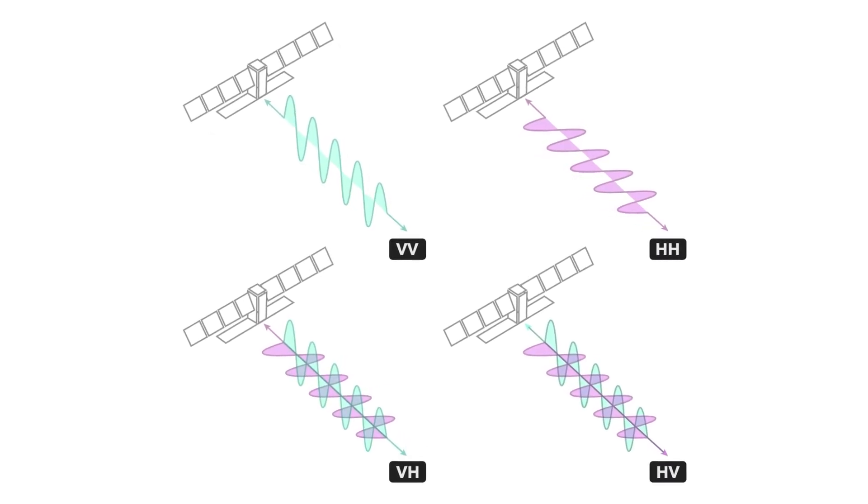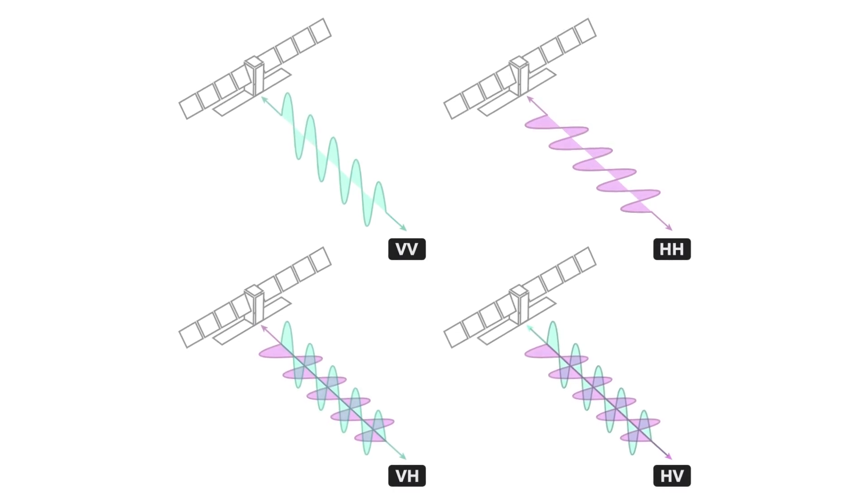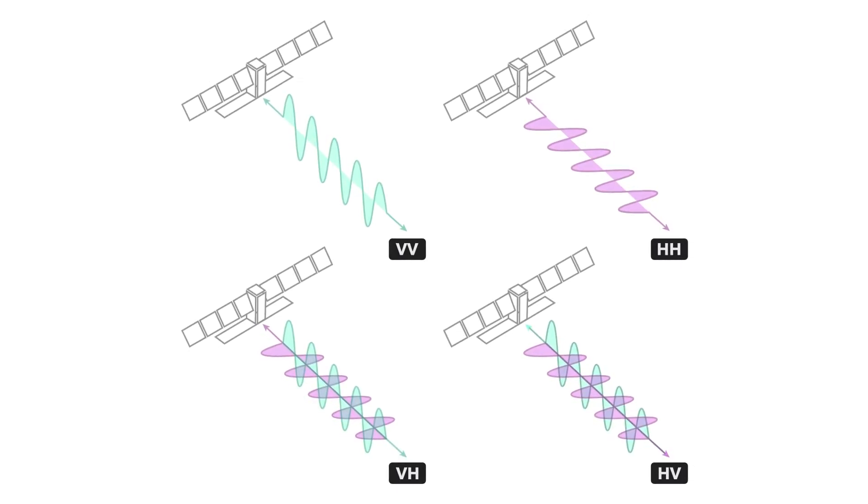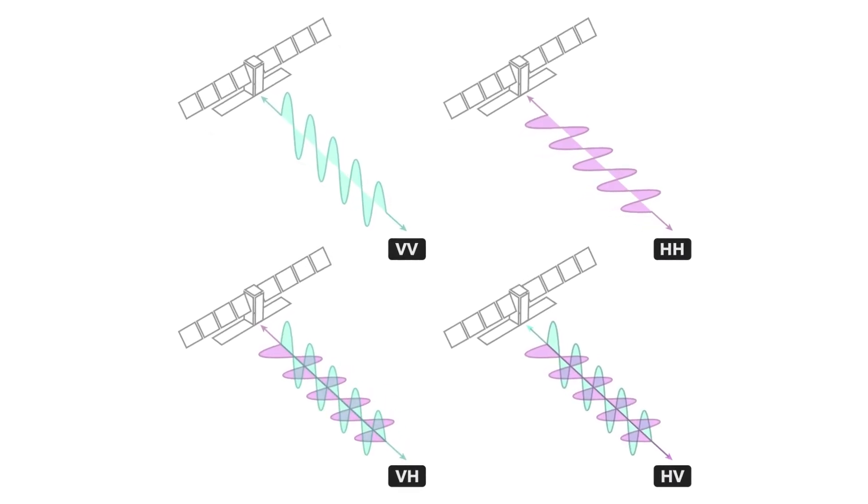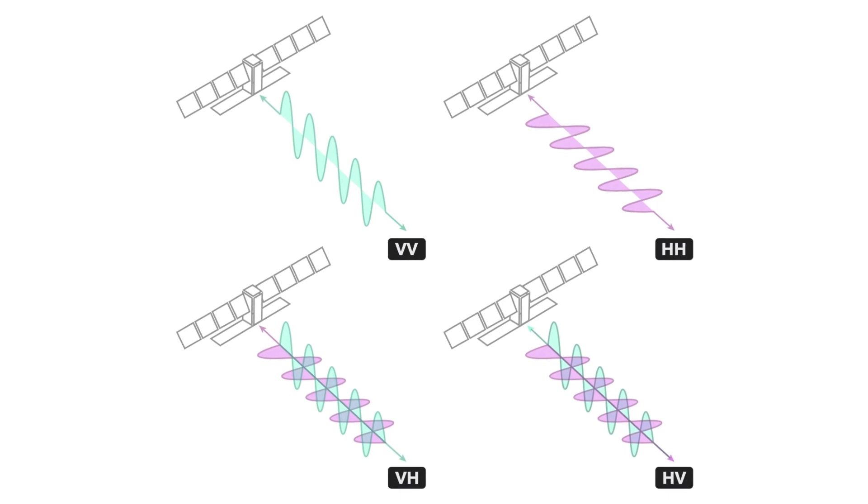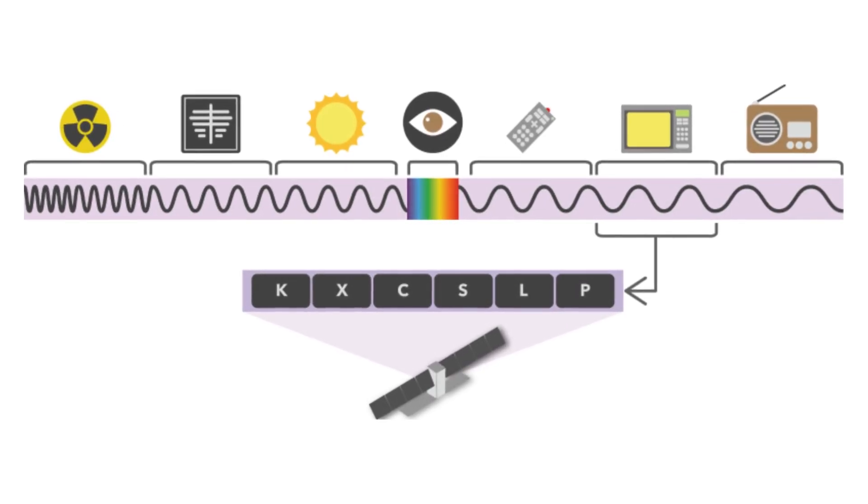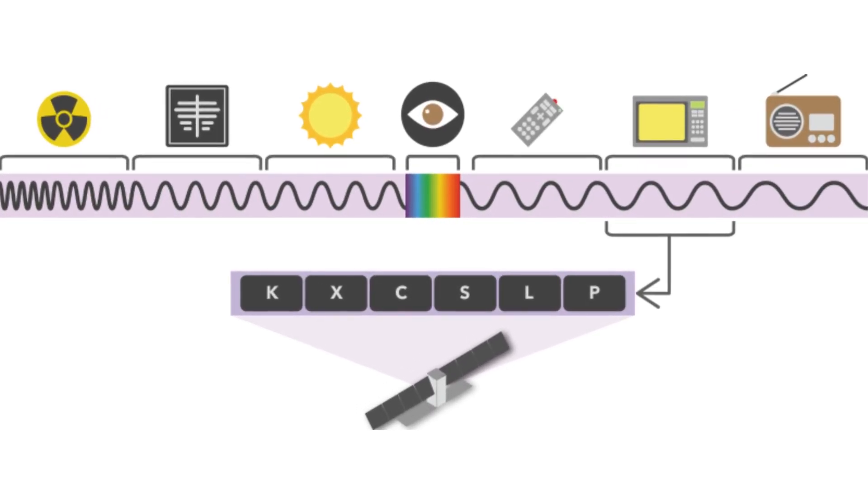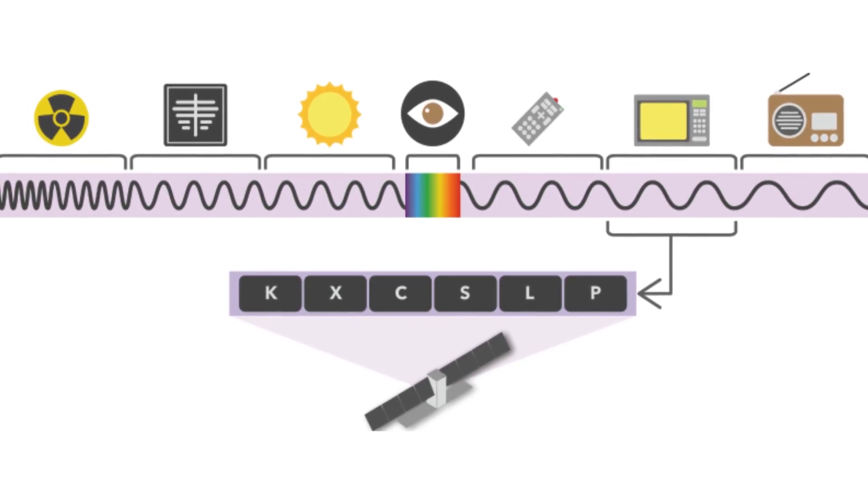2. Cross polarized, the transmitted and received waves do not share the same polarization: VH polarized data, HV polarized data. 3. Dual polarized SAR images feature either VV, VH polarized data. 4. Quad polarized SAR images feature both VV, VH polarized data, and HH, HV polarized data.